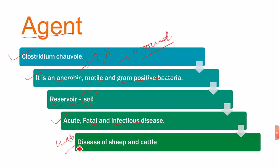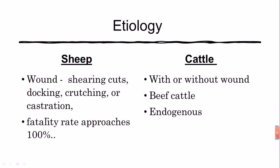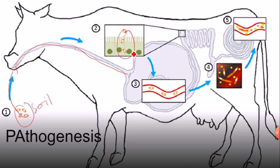It is an acute, fatal, and infectious disease. The most common and favorable hosts for Clostridium chauvoei are sheep and cattle. Regarding its pathogenesis: from the soil, spores are taken up by the mouth and ingested into the animal body. They travel through the GI tract and reach the intestine, where they enter the bloodstream, open into vegetative form, and disseminate their toxins, which cause the Black Leg disease.